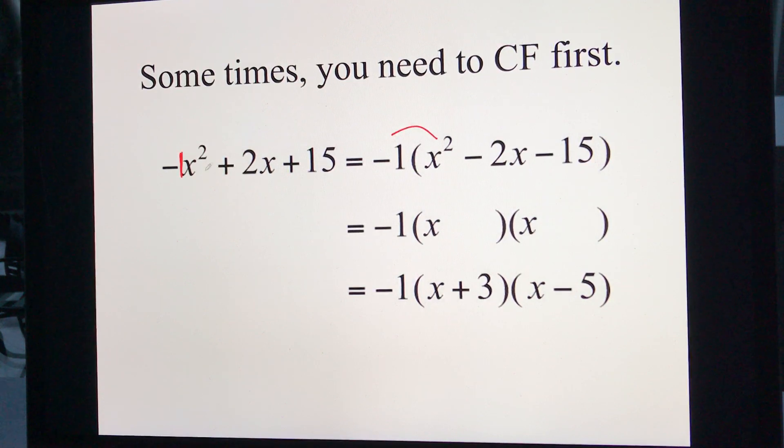negative 1 times x, that's negative x squared, negative 1 times negative 2, there's my positive 2, and negative 1 times negative 15 is positive 15.